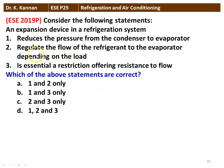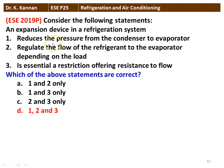The next question from the 2019 question paper: an expansion device in a refrigeration system reduces the pressure from the condenser to the evaporator, regulates the flow of refrigerant to the evaporator depending on the load, and is essentially a restriction offering resistance to the flow. All three statements are correct. The expansion device reduces condenser pressure to evaporator pressure, regulates flow, and offers essential flow resistance.